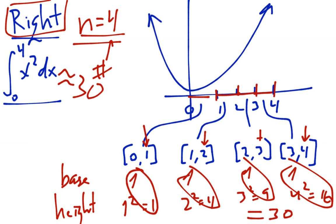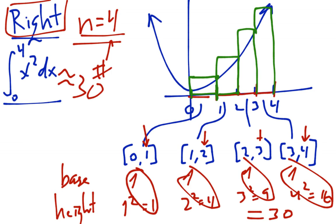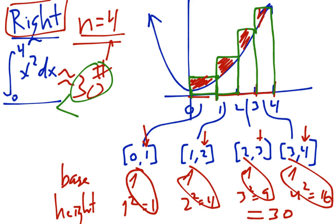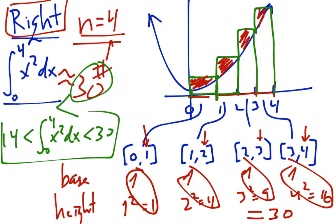My first interval goes from 0 to 1, and because I choose the right side, the right-hand side goes up to meet the function. For each subsequent rectangle, the right-hand side goes up to meet the function and then goes across. Notice that because the function is increasing and we're using a right-hand sum, we are over-counting. The true integral value has to be less than 30. Comparing to our left-hand sum of 14, the actual integral from 0 to 4 of x squared dx has to be less than 30 and greater than 14.